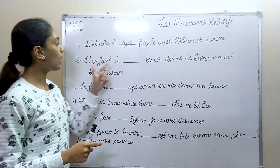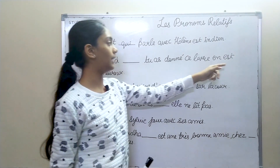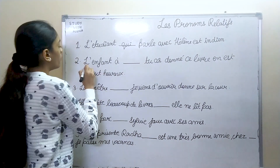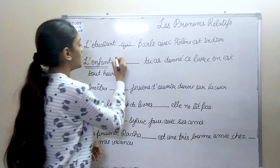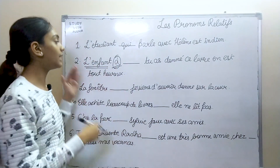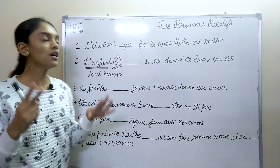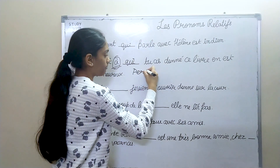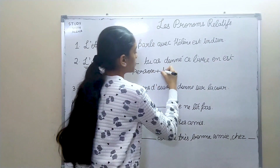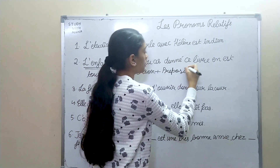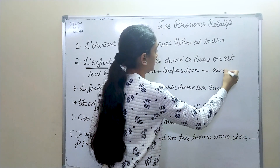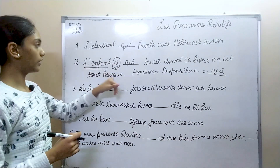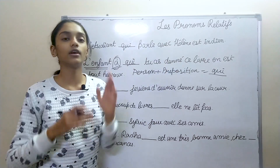Second: "L'enfant à ___ tu as donné ce livre est très heureux." Here we have a person — L'enfant — followed by a preposition. When you have a person plus a preposition, place qui. The answer is: "L'enfant à qui tu as donné ce livre est très heureux" — the child to whom you gave the book is very happy.